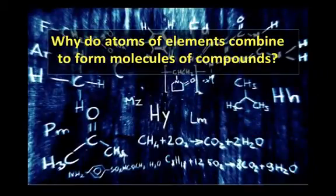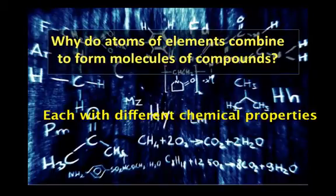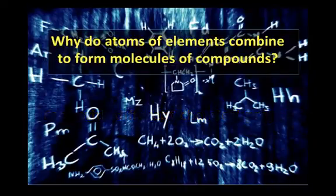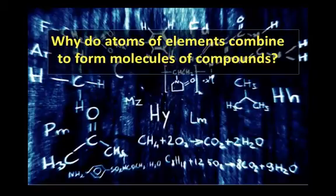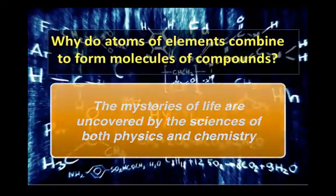So why do atoms of elements combine to form molecules of compounds? How do the 92 or so elements that exist naturally combine to make millions of compounds, each with different chemical properties? These elements and compounds are interacting spontaneously all the time. What's going on to cause this? Well, that's one of the basic questions that led to the development of the science of chemistry. As we say, the mysteries of life are uncovered by the sciences of both physics and chemistry.